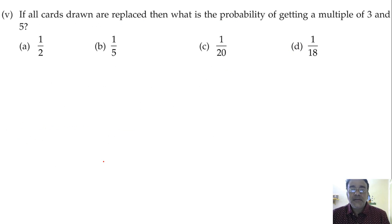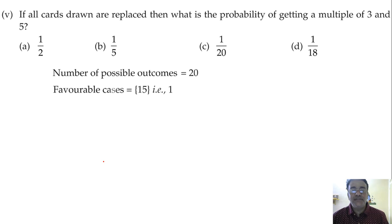Now we'll move towards question number 5. If all cards drawn are replaced, then what is the probability of getting a multiple of 3 and 5? See, and it is written means it should be multiple of 3 also and 5 also. And the number which is multiple of 3 and 5 both is a multiple of 15. So how many numbers are there which is a multiple of 15?